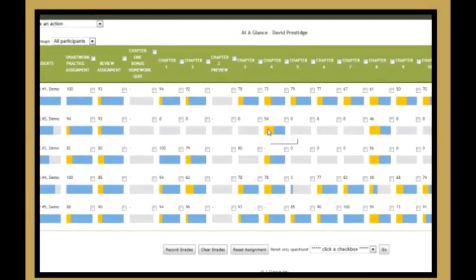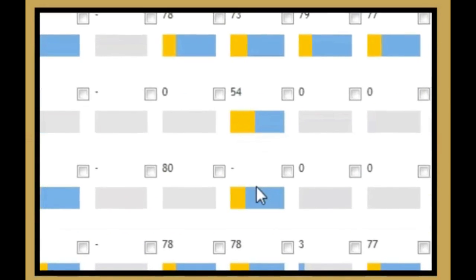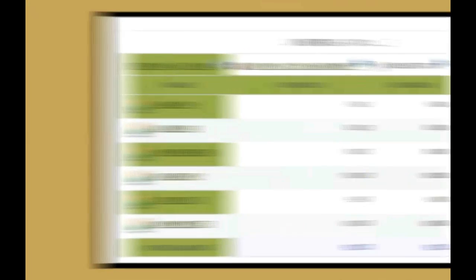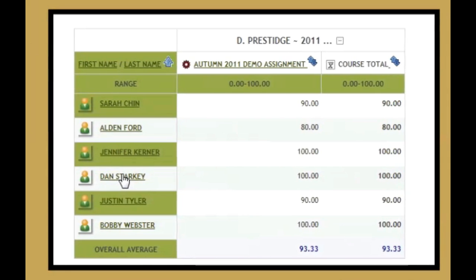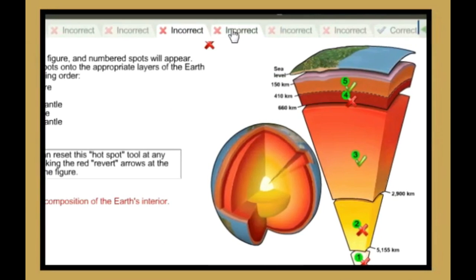Smart Work's at-a-glance gradebook shows how the class is doing and where they're struggling, and Smart Work keeps record of individual student performance so you can see exactly where a student went wrong and how they got there.